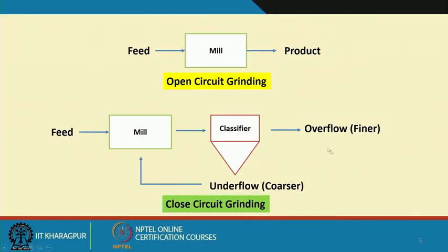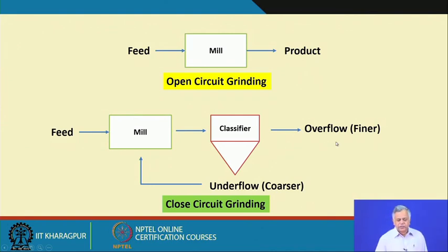Process efficiency of downstream unit operations largely depends on the quality of particles based on size. If they are coarser, they will create problems in downstream processes. But if they are too fine, that also creates problems for downstream processes. So we have to make proper choices of mill parameters and classifier parameters so that we do not generate too many ultra-fines. For example, if I need below 40 micrometers, I should not end up generating 90 percent of the particles below 10 micrometers.